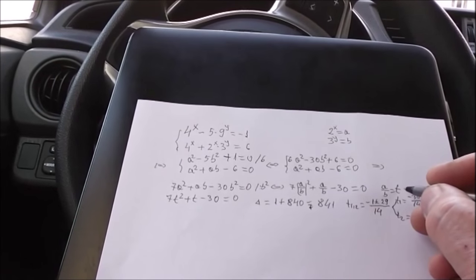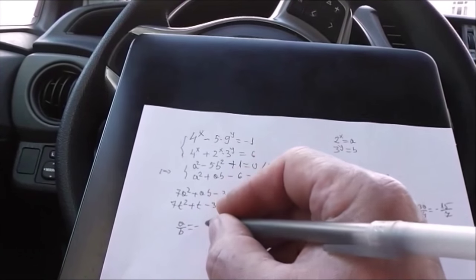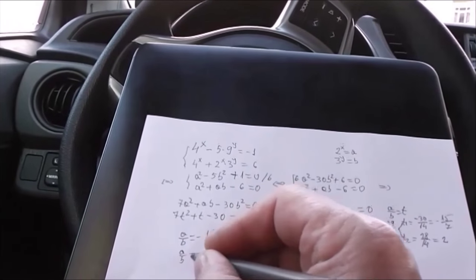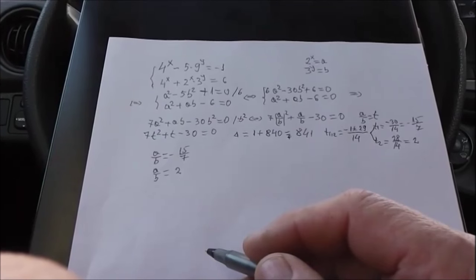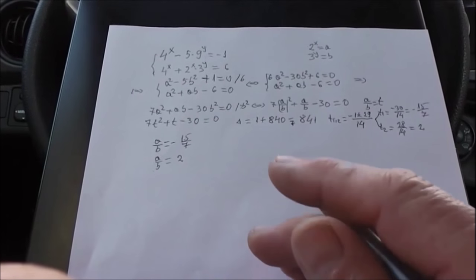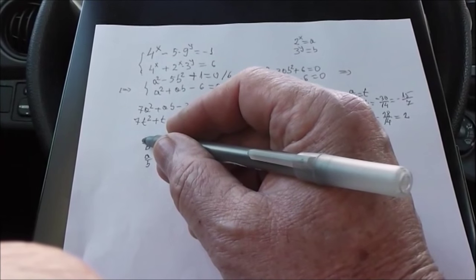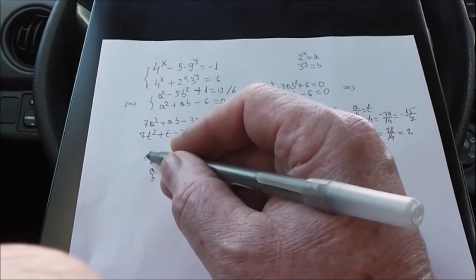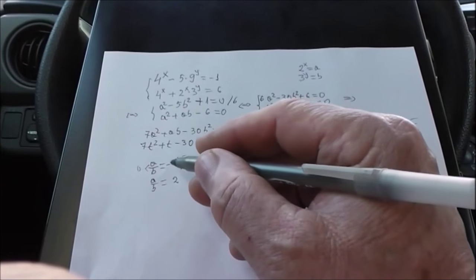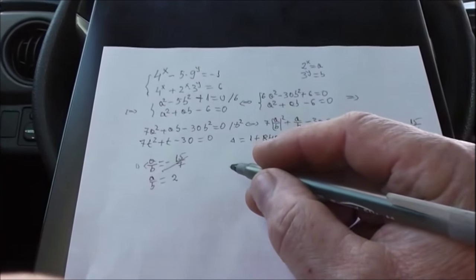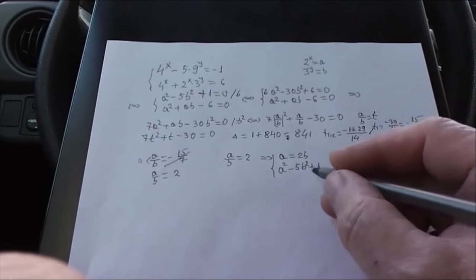Now we have two options. Once a/b equals negative 15/7 and a/b equals 2. Who are a and b? A is 2^x and b is 3^y. And a divided by b is bigger than 0. The exponent is always bigger than 0 and that means we can't use the first one. So we have a/b equals 2.